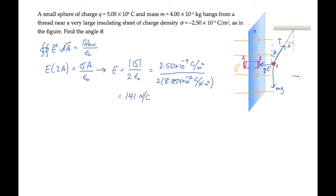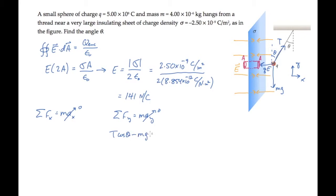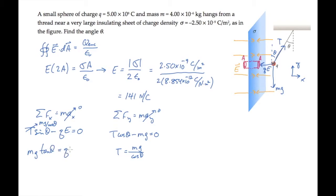Now we can set up a coordinate system and write Newton's second law for this charged particle. The charge is in equilibrium, so both accelerations are zero. Looking first at forces in the y direction, we find that the tension in the thread equals the charge's weight divided by cosine theta. In the x direction, we find T sine theta in the positive direction and the electric force QE in the negative direction. Substituting tension equals mg over cosine theta and simplifying, we can solve for the angle theta.